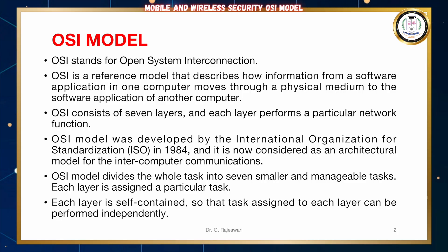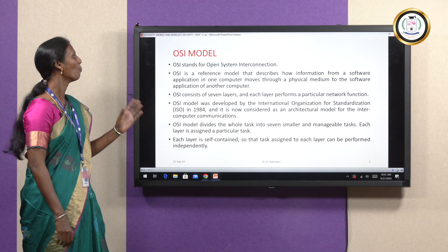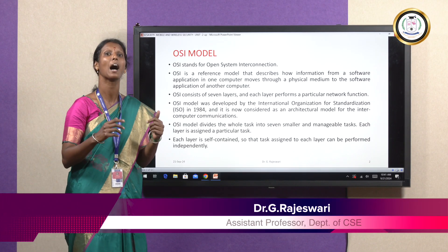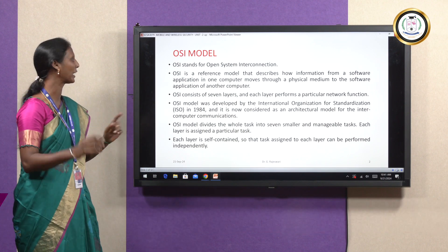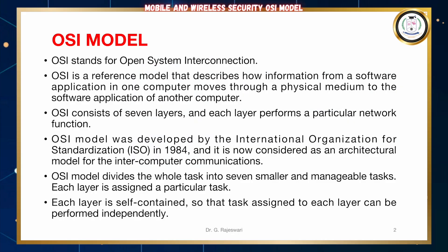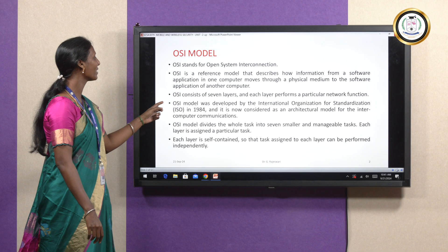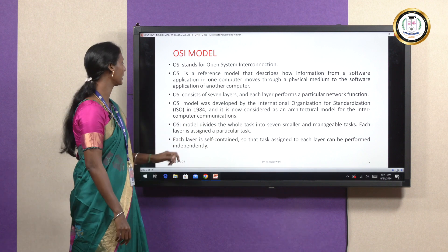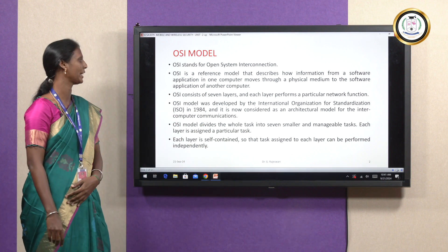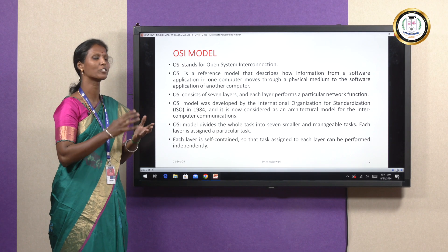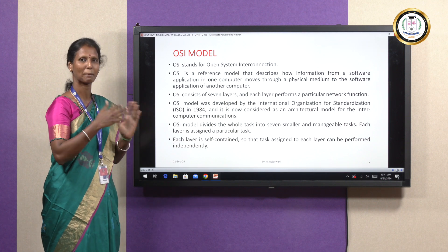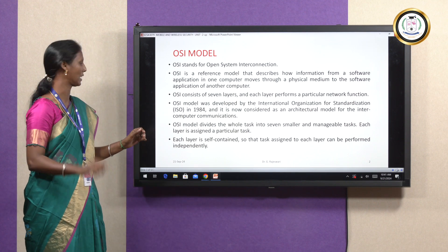OSI stands for Open System Interconnection. It is a reference model which describes how information from a software application in one computer moves through the physical medium to the software application of another computer. OSI consists of seven layers and each layer will perform its own particular function. OSI was developed by the International Organization for Standardization, ISO, in the year 1984. It is considered as an architectural model for inter-computer communications. OSI Model divides the whole task into seven smaller manageable tasks, and each layer is assigned with a particular task.